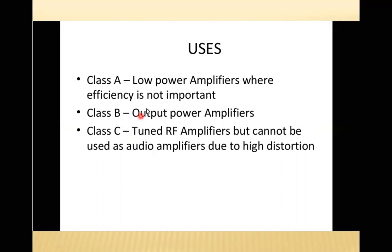Class A amplifiers are used for low power amplifiers where efficiency is not important. Class B for output power amplifiers. Class C for tuned radio frequency amplifiers but cannot be used as audio amplifiers due to high distortion. The choice depends on linearity, noise, and distortion requirements. We have studied linearity, distortions, efficiency, maximum peak-to-peak voltage, and uses of all the classes. These were the classes of amplifiers.